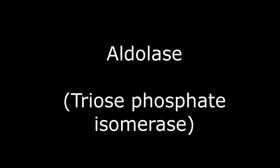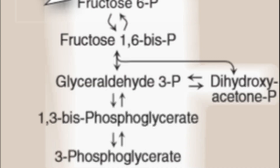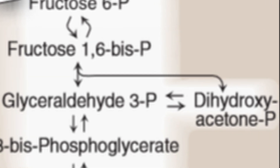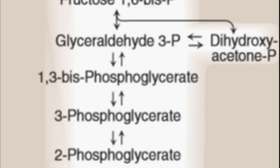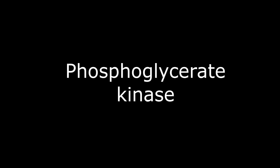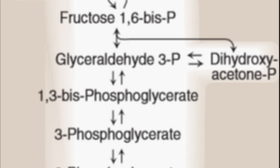Triose phosphate isomerase converts dihydroxyacetone phosphate into glyceraldehyde 3-phosphate. This is a side reaction that is important for increasing the concentration of glyceraldehyde 3-phosphate. The next enzyme is glyceraldehyde 3-phosphate dehydrogenase (G3P dehydrogenase), which catalyzes the conversion of glyceraldehyde 3-phosphate into 1,3-bisphosphoglycerate. The next enzyme is phosphoglycerate kinase, which catalyzes 1,3-bisphosphoglycerate into 3-phosphoglycerate.